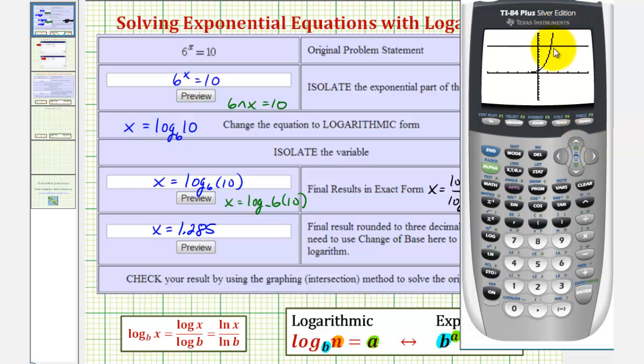The x coordinate of this point of intersection should be approximately 1.285 if our answer is correct. So we'll press 2nd TRACE for the calculation menu, and we want option 5 for intersection. So we'll press 5. Because we only have two curves or two graphs on the coordinate plane, we can just press enter three times. So enter, enter, enter. And notice how this does verify that our solution is correct. X is approximately 1.285.